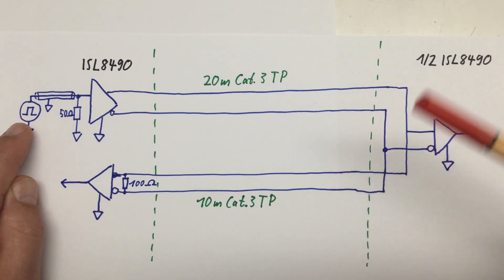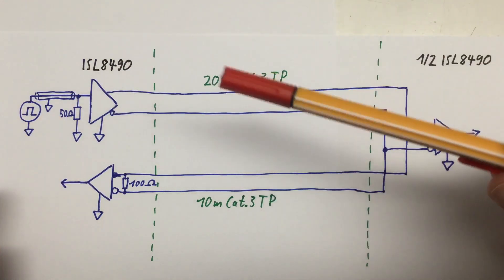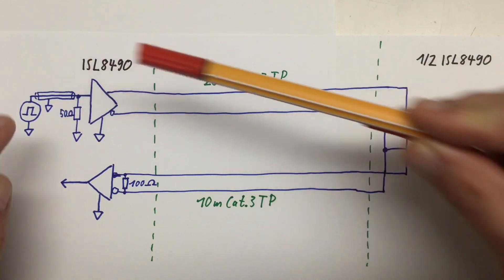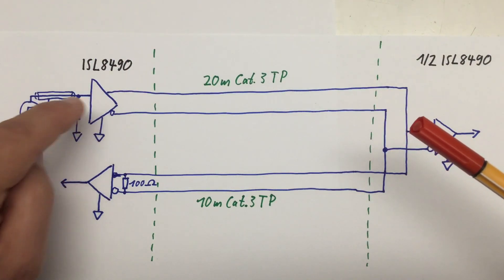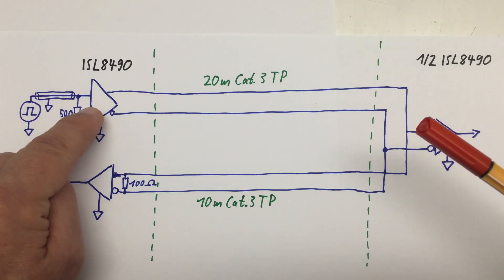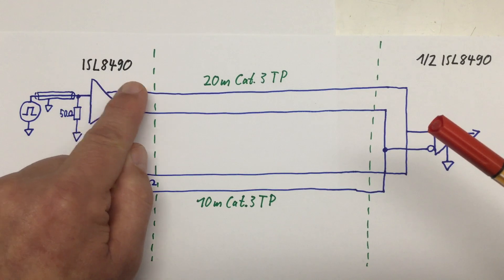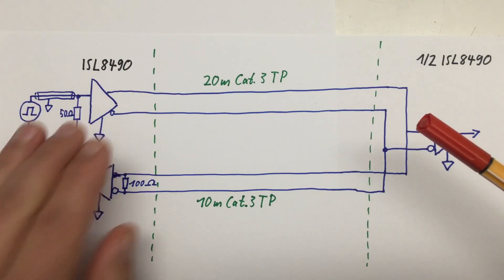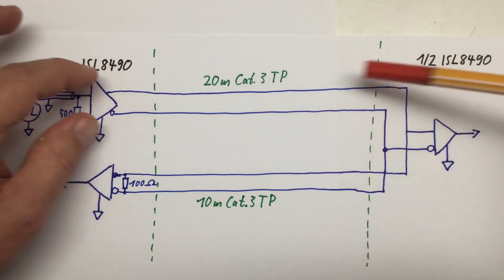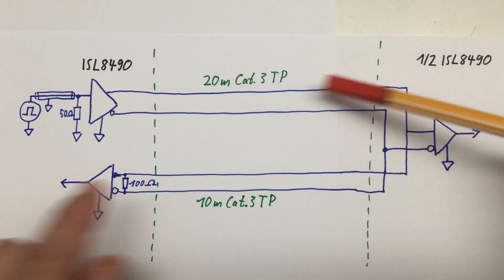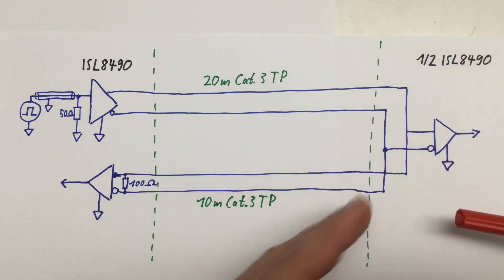To make things clearer, like in the first part of the details, my function generator is feeding via coax cable, a 10 MHz signal to the breadboard, terminated with 50 ohms. That goes into the transmitter half of my first ISL8490 RS422 transceiver. The signal goes via the RS422 line, 20 meters of CAT3 twisted pair cable, to my right breadboard,